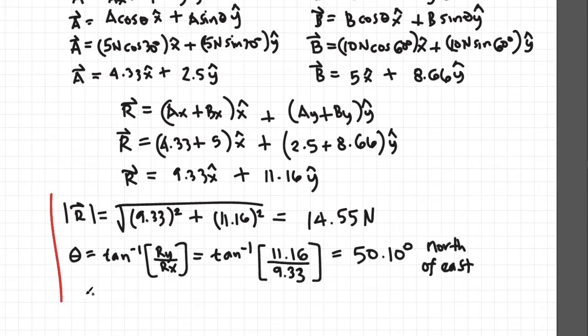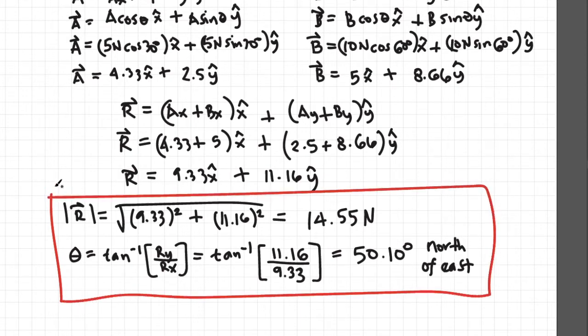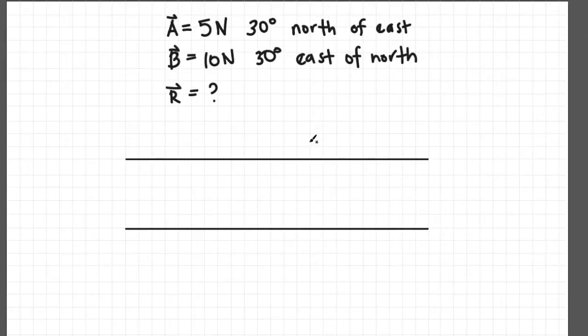But let's try using the law of cosines and law of sines to determine the resultant vector of vectors A and B. Consider these two parallel lines, and if you try to intersect it with a straight line, if this is theta, then this is also theta.